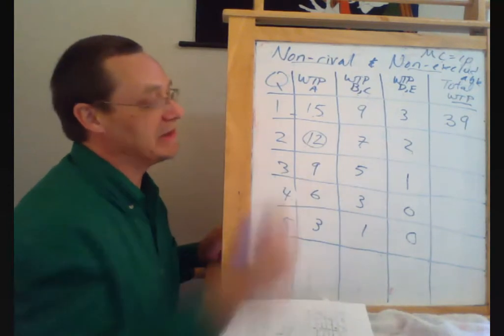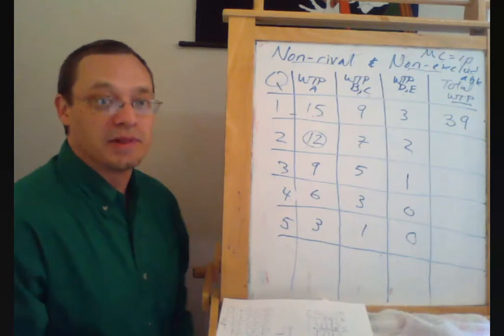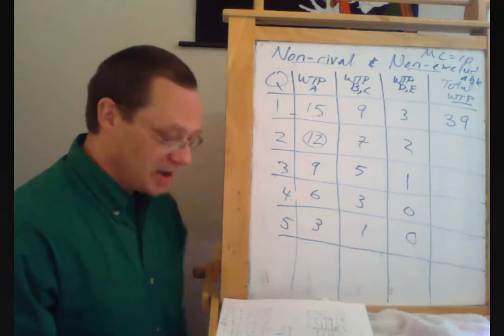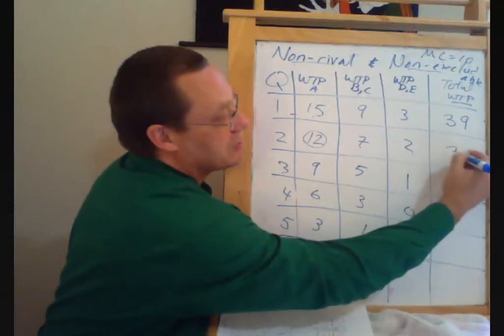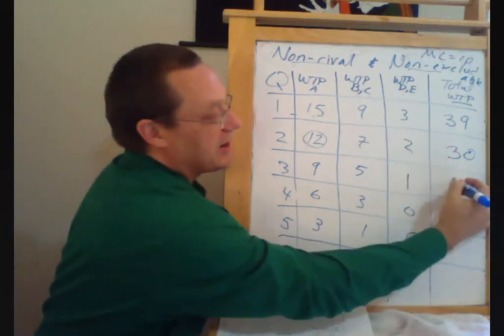We do something similar for the second street light. One person values it at 12, plus two people at seven, plus two people at $2 each. And if we add all those up, we get to 30. And same kind of thing going down the line here.